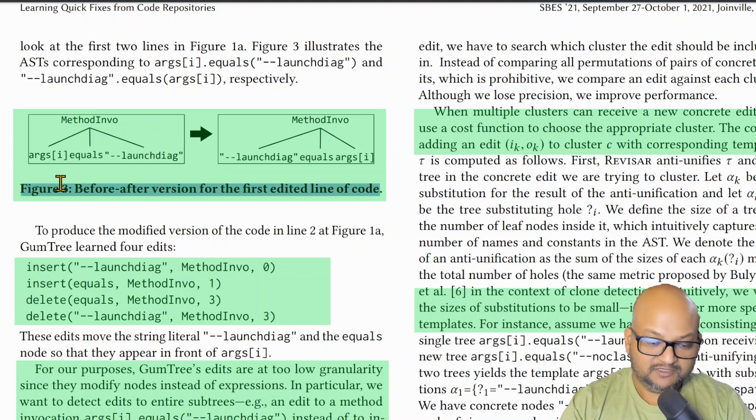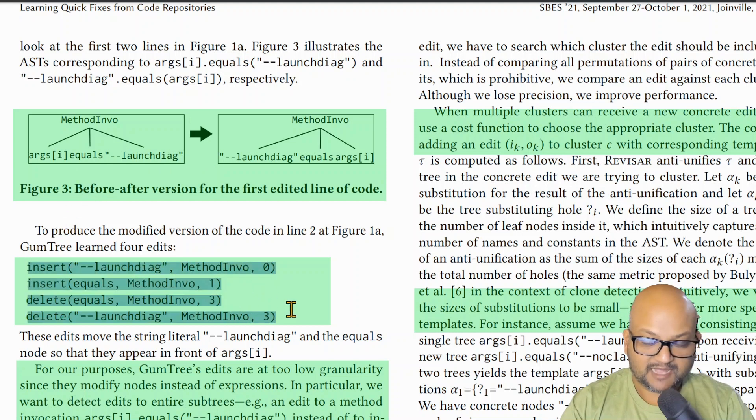Once you have the two trees—the tree before the commit and the tree after the commit—you look at the delta between those two trees and express the edit in that commit as a list of changes to the before abstract syntax tree that brings it to the after abstract syntax tree.